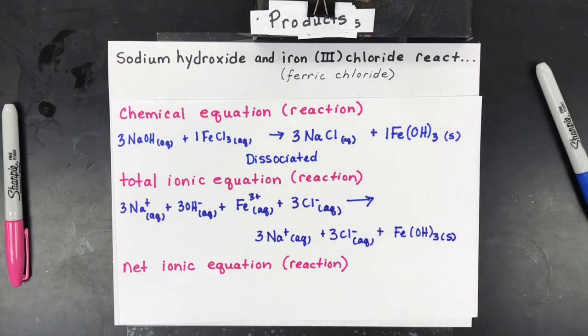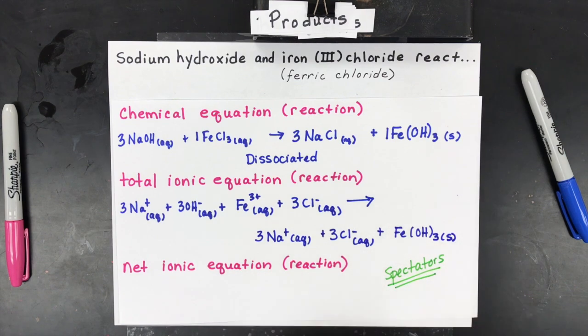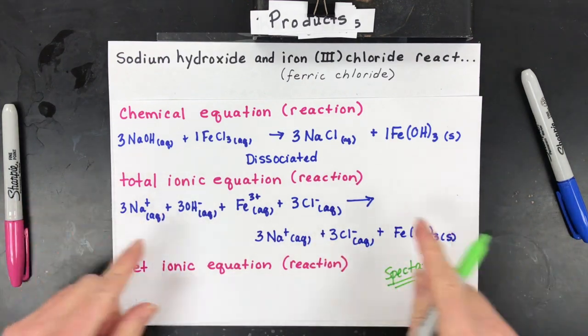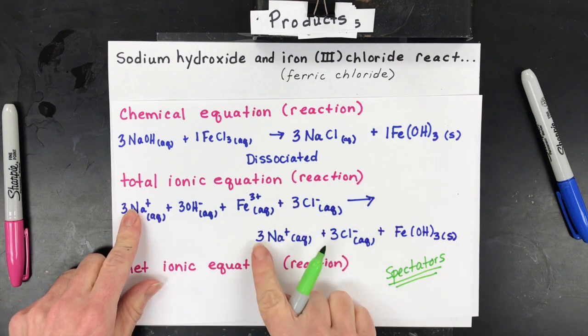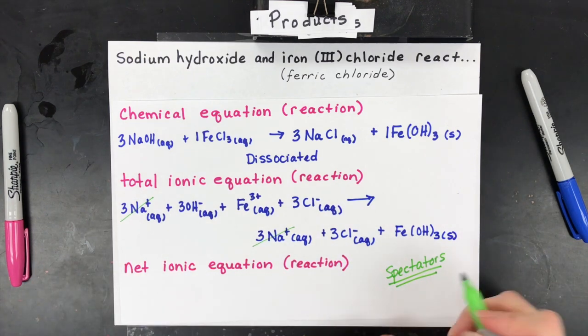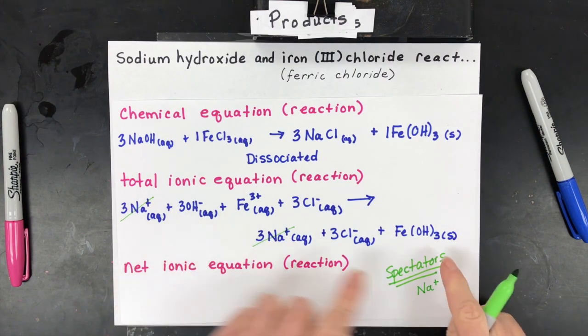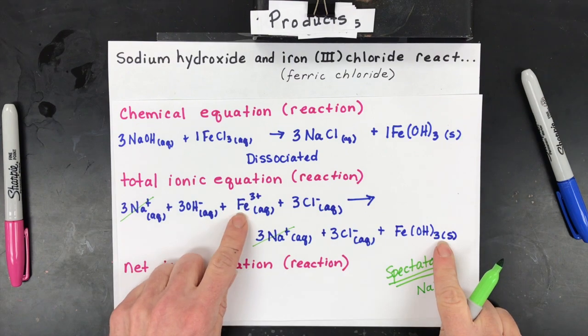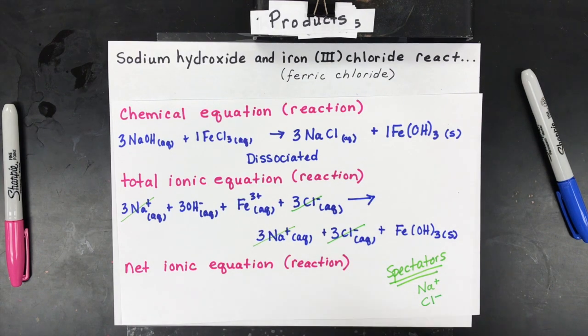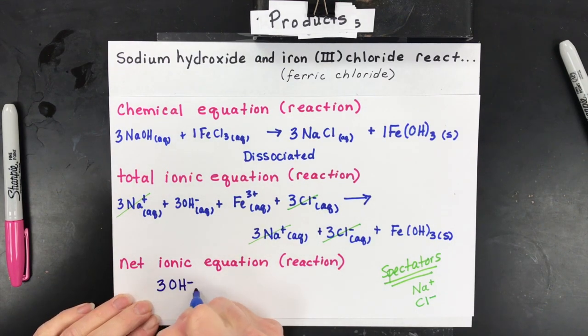Then what we're looking for are called spectator ions. Spectator ions are ions that do not participate in the chemical change. They actually remain unchanged on both sides so it's kind of like playing memory match. So you want to look on this side of the arrow on the reactants and look for a product that matches and that's sodium. So this is a spectator ion and what happens is I remove that ion and I won't write it in the net ionic. And then these hydroxides they end up in a solid form so I'm not going to get rid of those. Same with the iron but these chlorides are an exact match on both sides so they're a spectator ion.